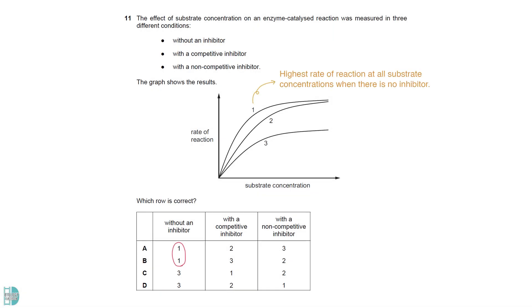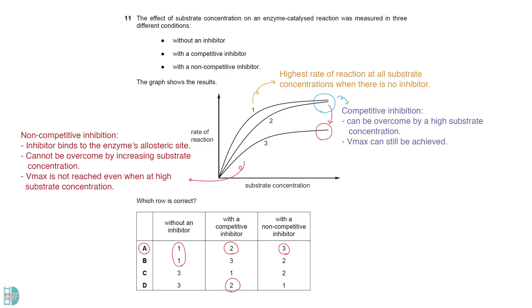The rates of reaction should be the highest at all substrate concentrations when there is no inhibitor. Competitive inhibition can be overcome by a high substrate concentration, so Vmax can still be achieved. A non-competitive inhibitor binds to the enzyme's allosteric site. It cannot be overcome by increasing substrate concentration. So, Vmax is not reached even when the substrate concentration is high.